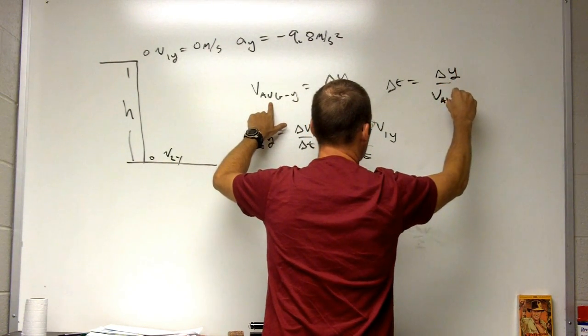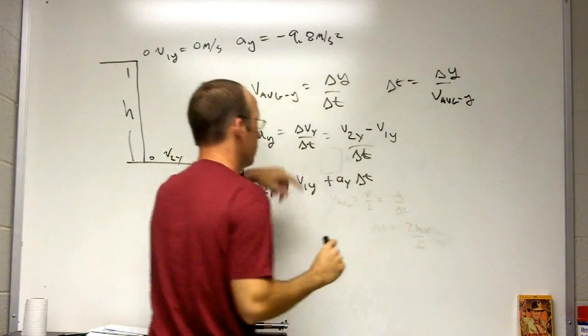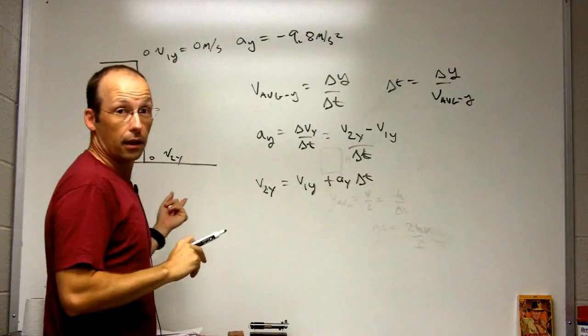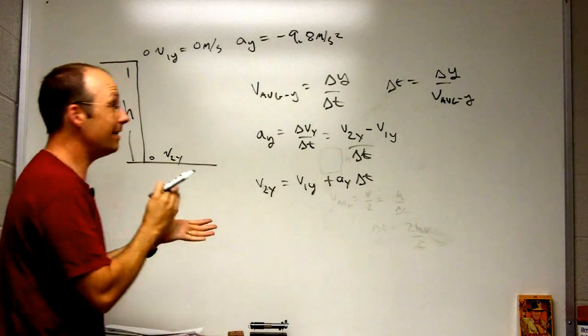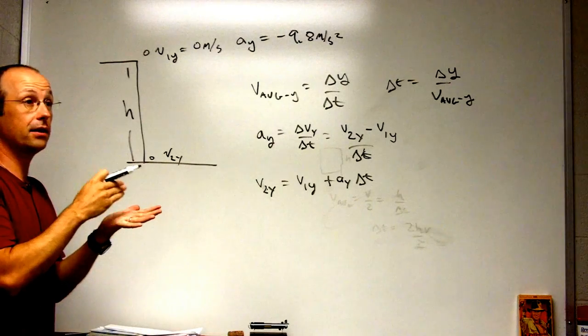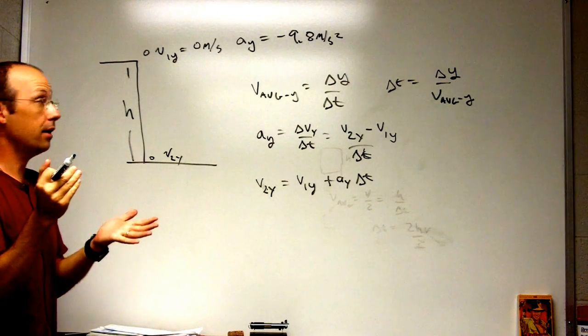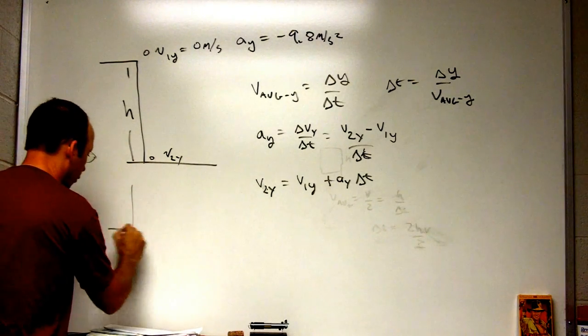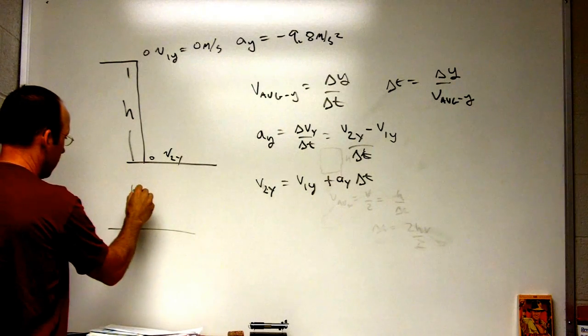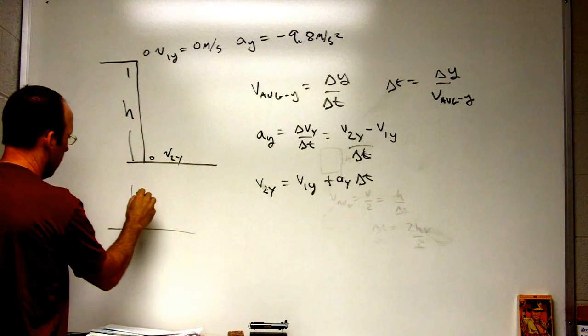And average velocity, since the velocity is changing at a constant rate, then the average velocity - you know, if I drew a graph of vy as a function of t, it would look like this, right?